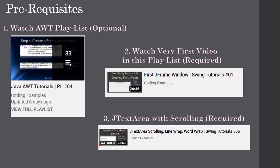This example uses JFrame and JTextArea with scrolling support, so you can watch those two prerequisite videos prior to watching the current video. If you already know about JFrame and JTextArea, you can skip those two videos.